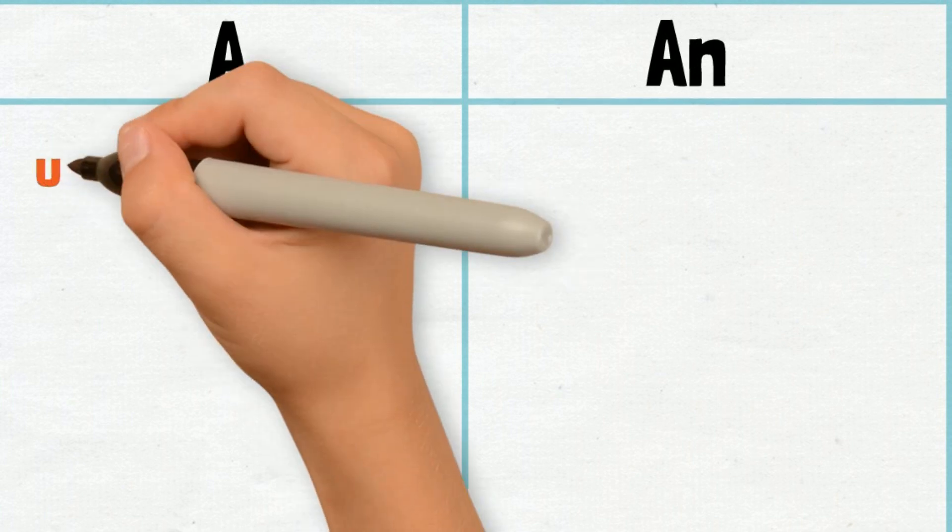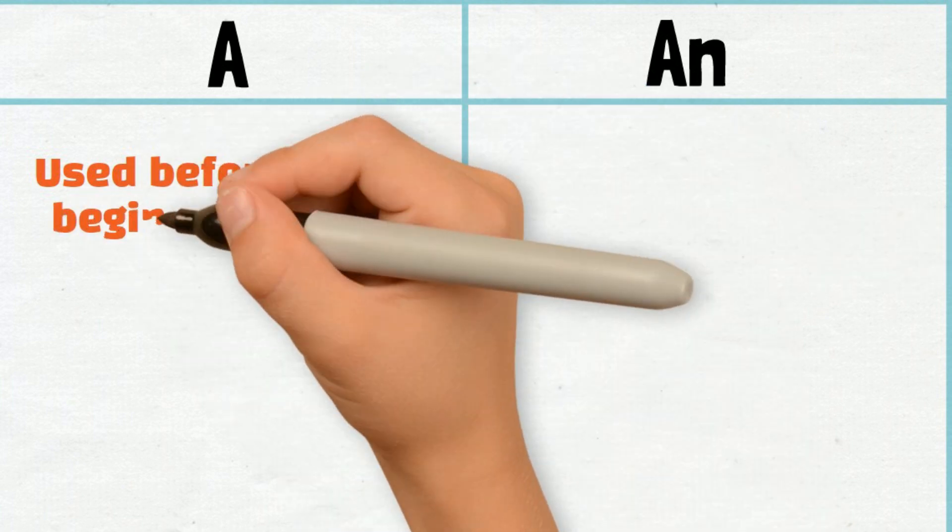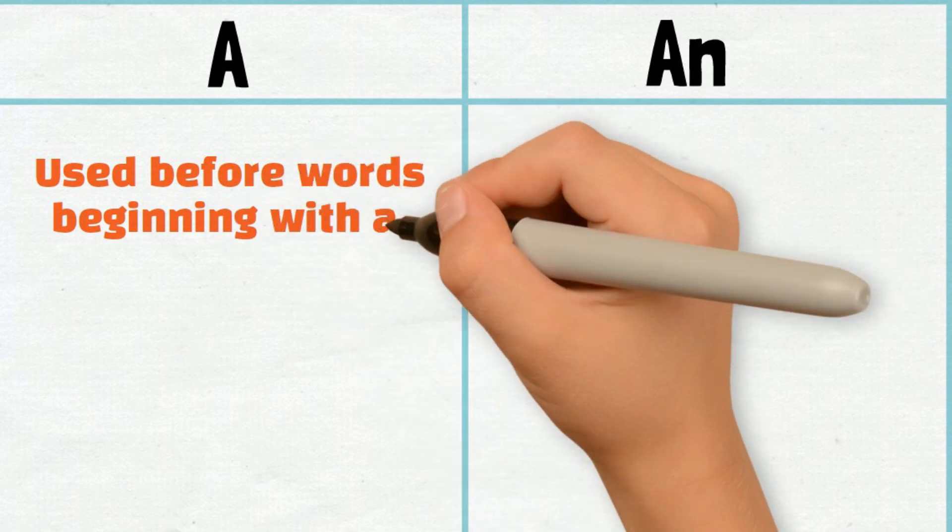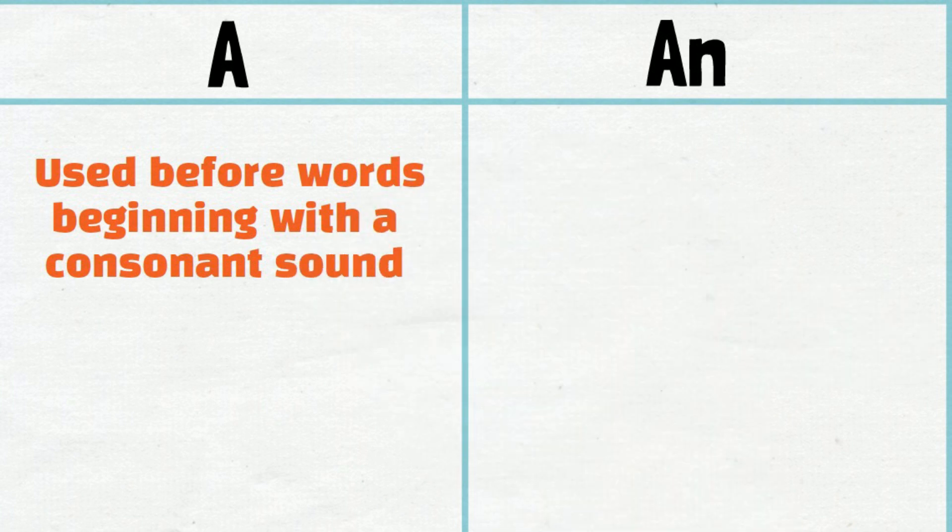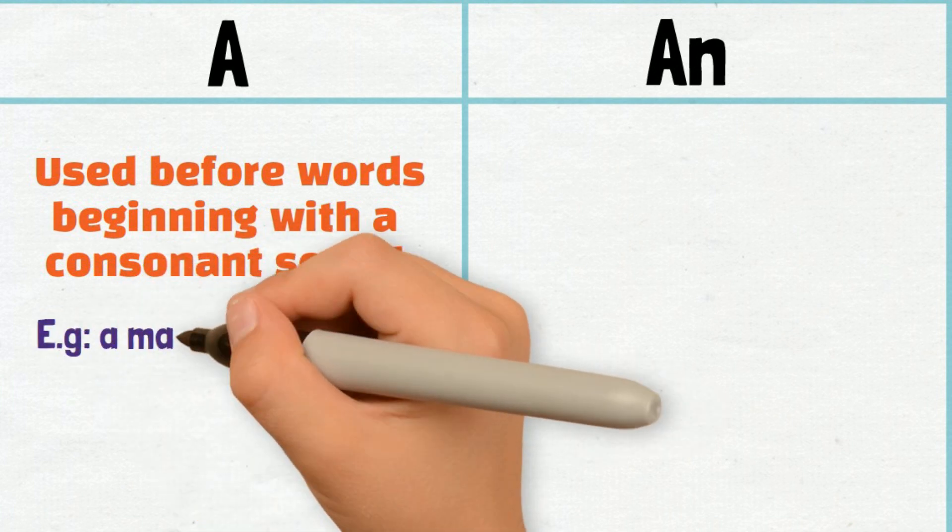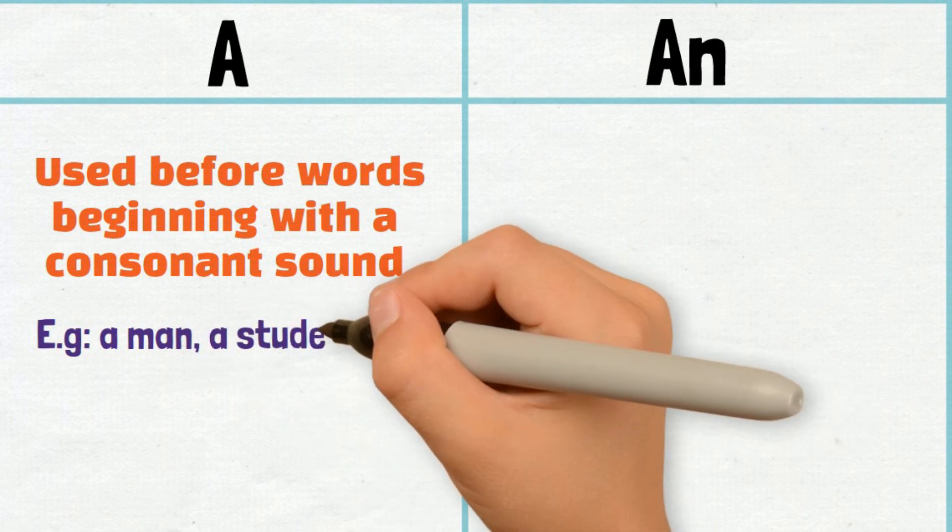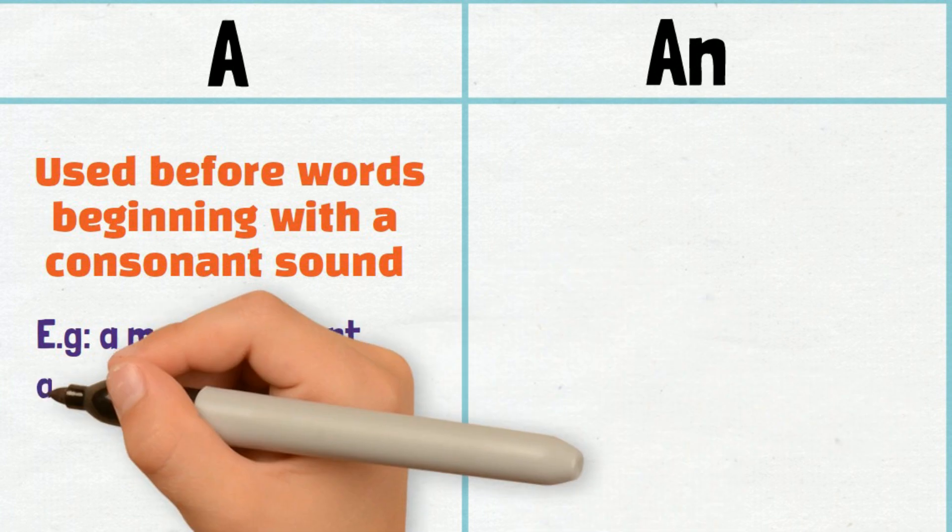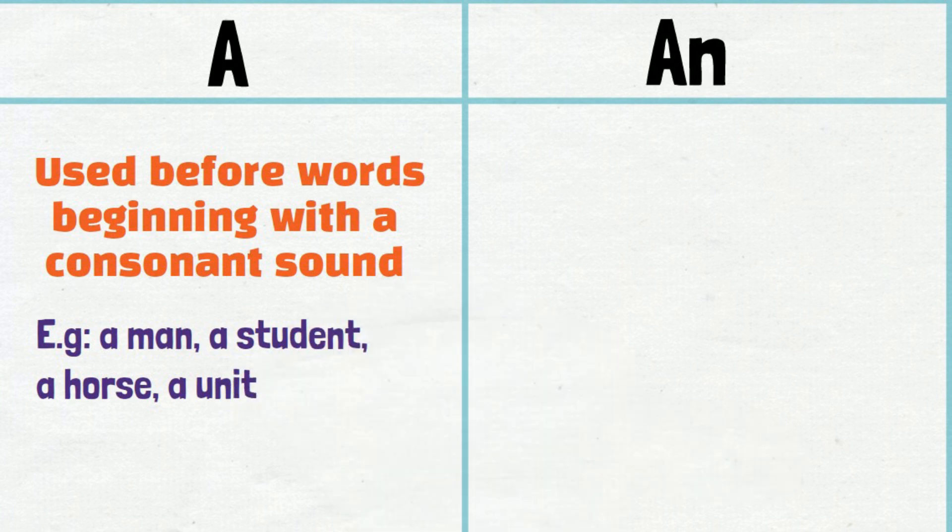A is used before words beginning with a consonant sound. Example: A man, a student, a horse, a unit.